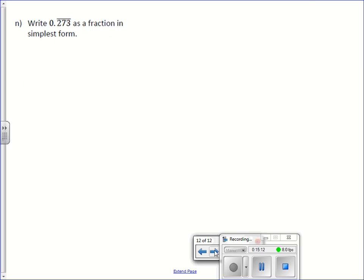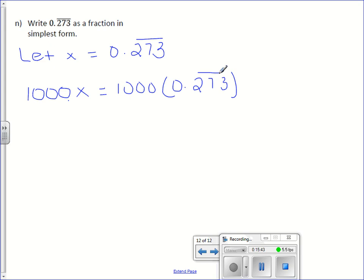Let's try one more. This time I have 3 digits repeating. So what are you going to multiply by? Good, 1,000. But first let's do our let statement. Let x equals 0.273 repeating. So again, we're multiplying by 1,000. 3 digits repeating. That means 3 zeros. 1,000x equals 1,000 times 0.273 repeating. With 3 zeros, it means I move my decimal over 3. So 1,000x equals 273.273 repeating.